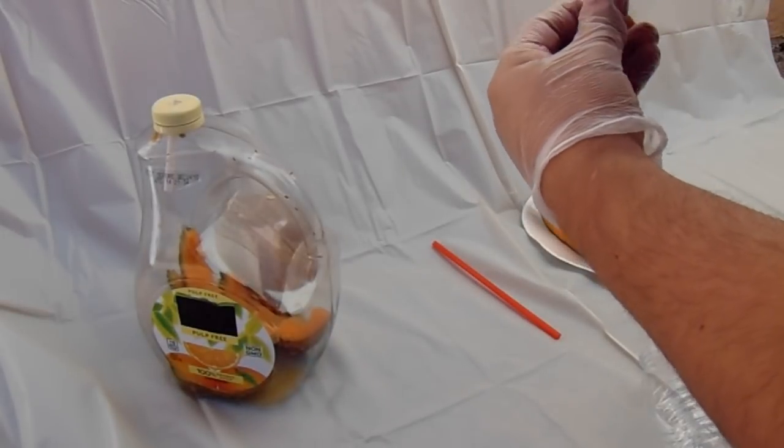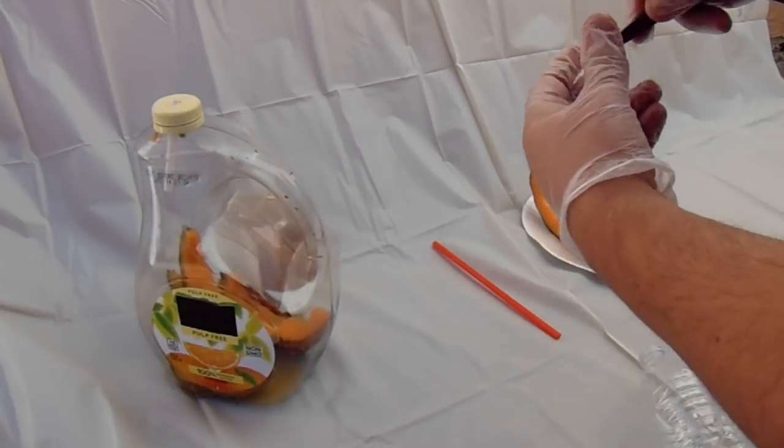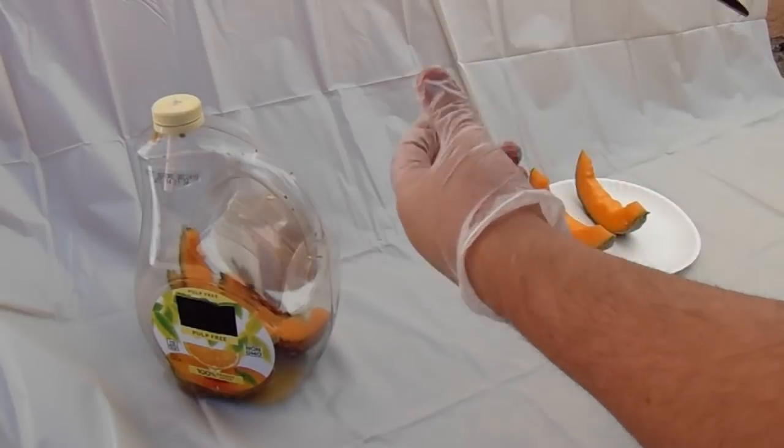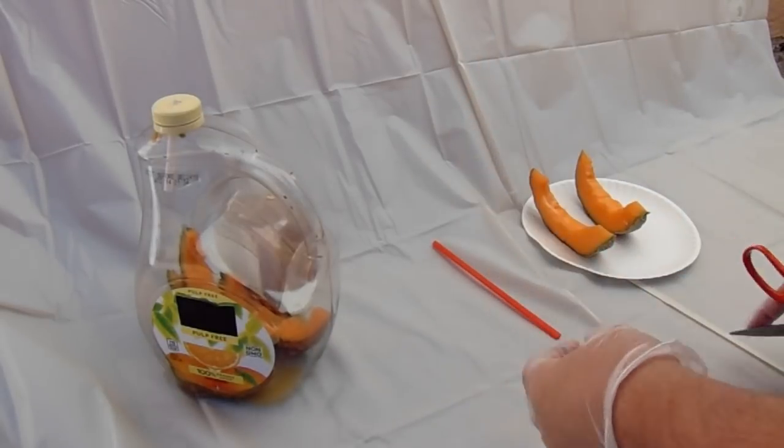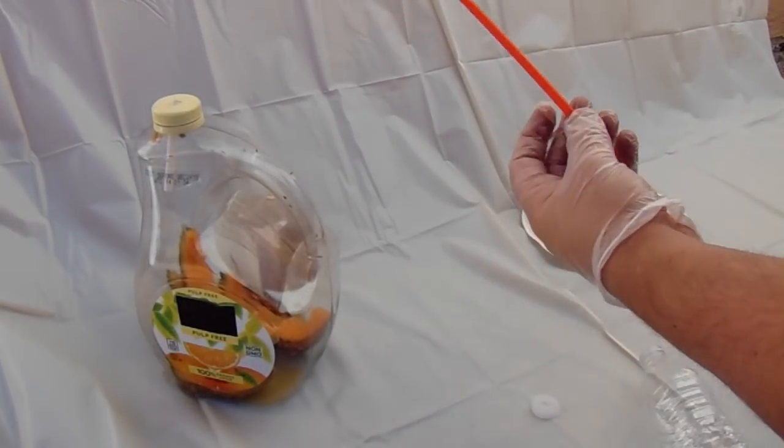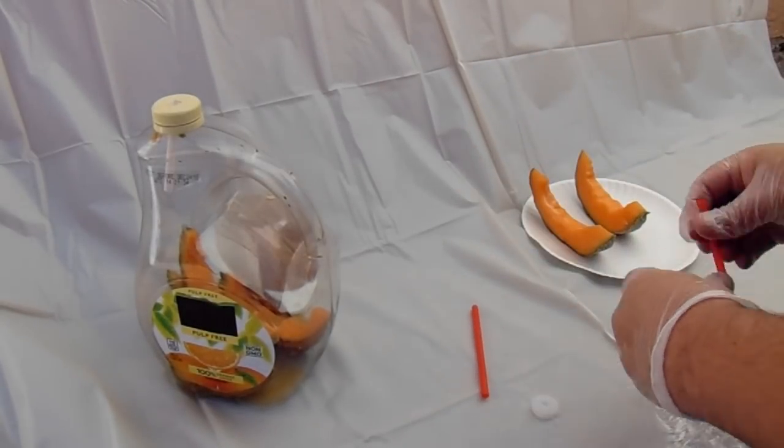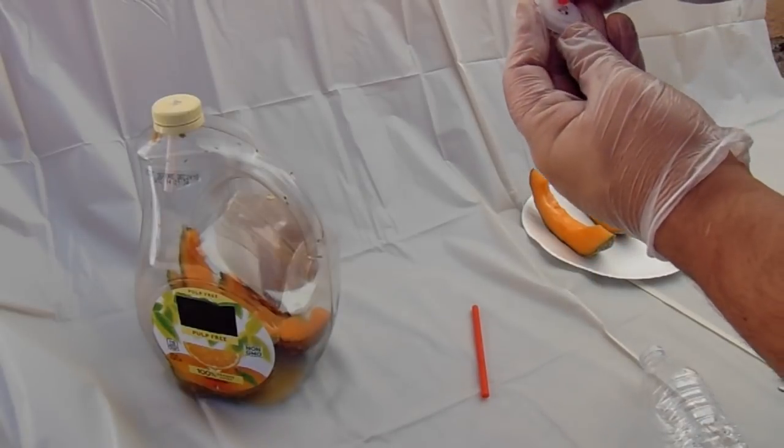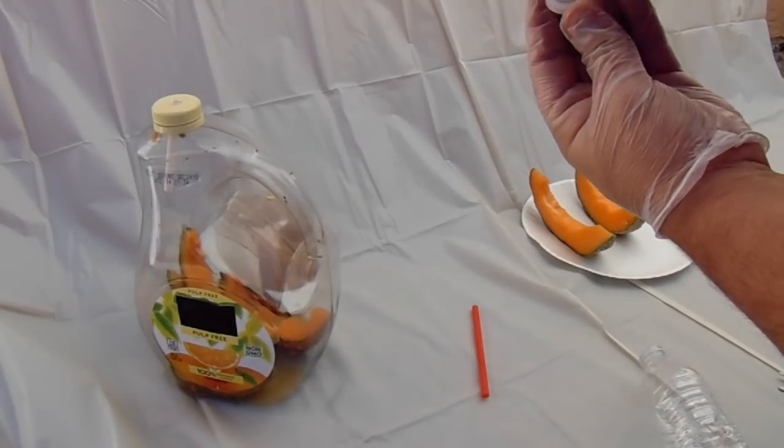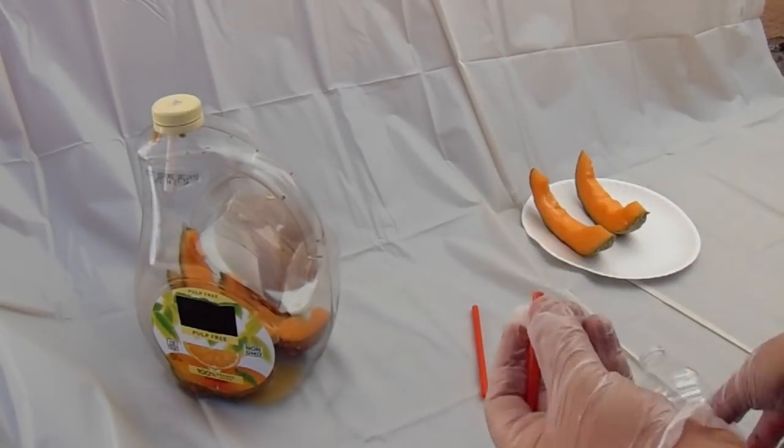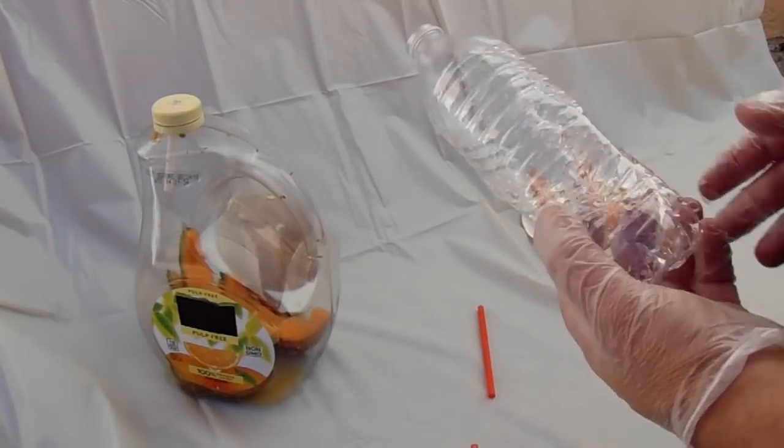Make the hole a little bit bigger, just enough to where you can fit a straw in. Cut the straw to size, fit it in, and put the straw inside the cap like that.